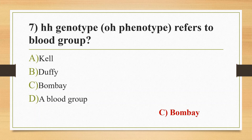Moving to other options: Kell is a minor blood group consisting of at least 34 antigens and is the third most immunogenic following the ABO and Rh systems. Duffy is also a minor blood group. In the case of Duffy, Duffy-null Africans are resistant to Plasmodium vivax infection.